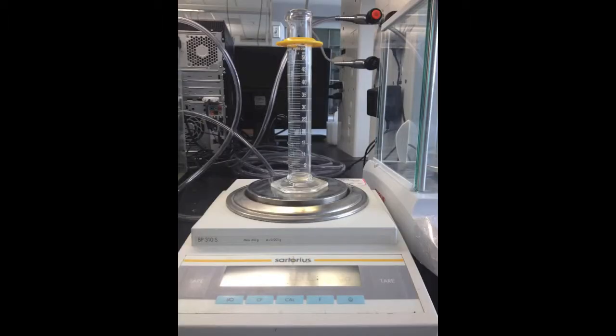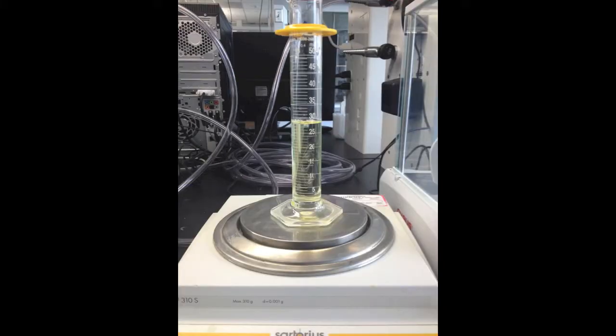Next, use a graduated cylinder to find the mass and volume of your product. To do this, place a graduated cylinder on a scale and zero the scale. Pour your product into the graduated cylinder and place it back on the scale. The mass displayed on the scale is the mass of your product. You can use this value to calculate your percentage yield.